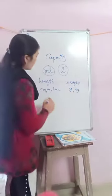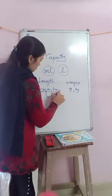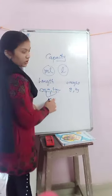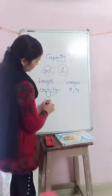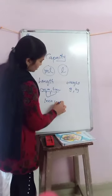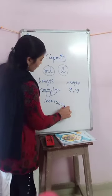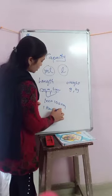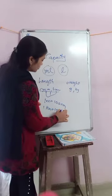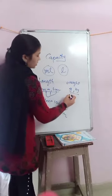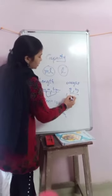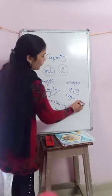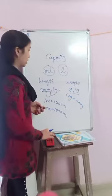Then we are learning the relation between centimeter, meter, and kilometer. One meter equals one hundred centimeters, and one kilometer equals one thousand meters. For gram and kilogram, one kilogram equals one thousand grams.